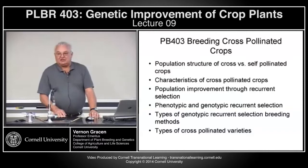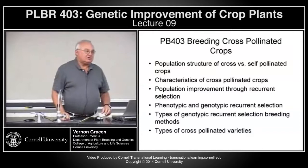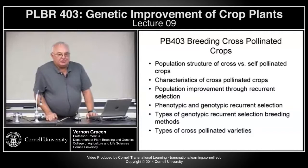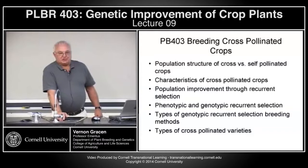Cross-pollinated crops are either bred as open-pollinated varieties or synthetics, or the varieties we develop are F1 hybrids produced by developing inbreds and hybrids. Before we can talk about hybrids on Wednesday, we'll talk about the concepts of inbreeding depression and heterosis.